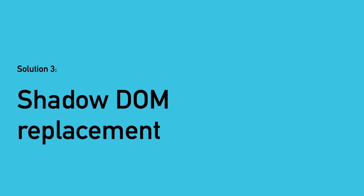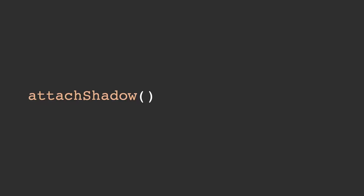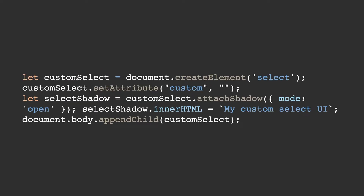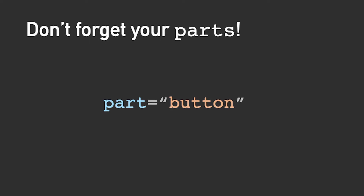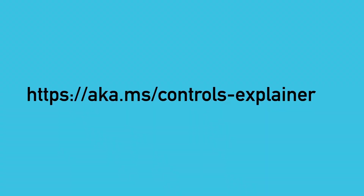Adding that part name will also apply the correct accessibility semantics to your controls — we're going to let the platform do what it was meant to do. Finally, our third solution is shadow DOM replacement. Currently, attachShadow throws an exception — you can't actually call it on any form control. This restriction will be removed when enabling customization for a given control type, and calling attachShadow will result in the default user agent shadow DOM being swapped out with a new shadow root populated with content provided by the developer. Developers will also be required with the shadow DOM solution to label the core parts using the part attribute — otherwise the shadow DOM will not be rendered. The platform will not attempt to guess at the correct behavior and won't render an incomplete control implementation. You can find the full explainer at aka.ms/controls-explainer.